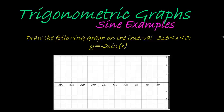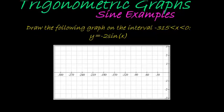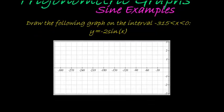Let's look at example 2. Here we are asked to draw the following graph on the interval, and then they give us an interval. Here we see that we have y is equal to negative 2 sine x. So we can see we have an a value. So we'll follow our steps.